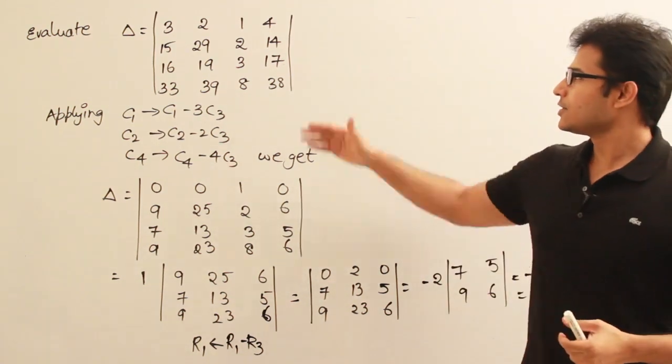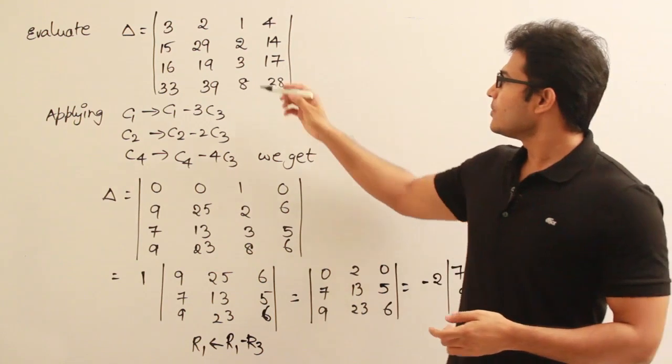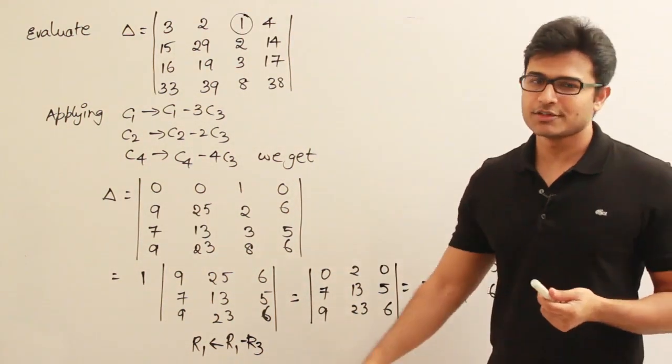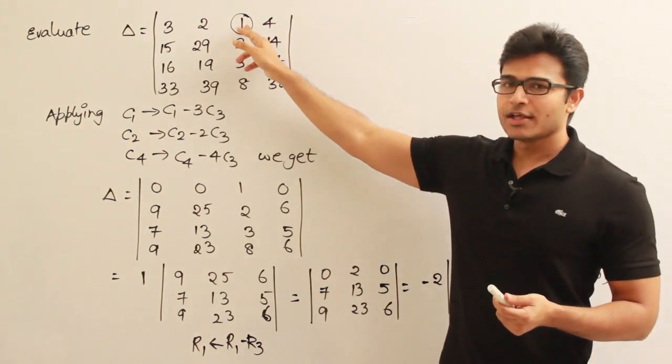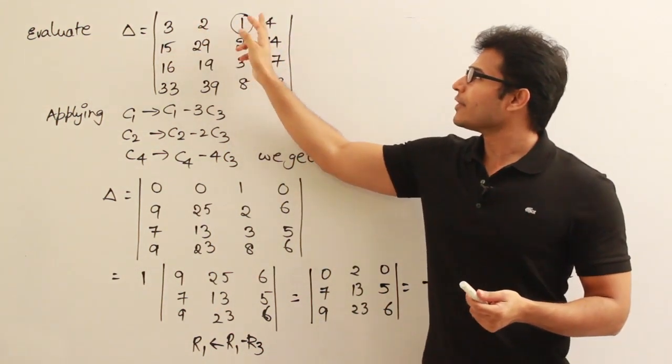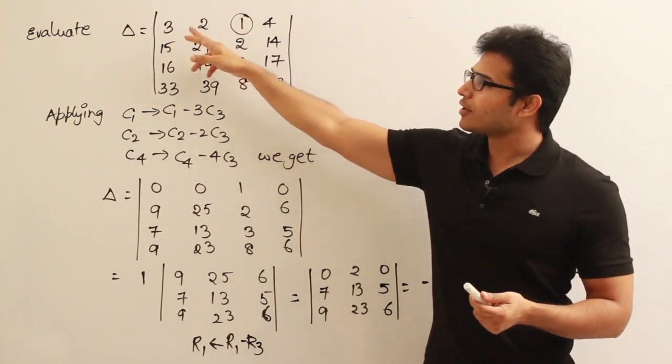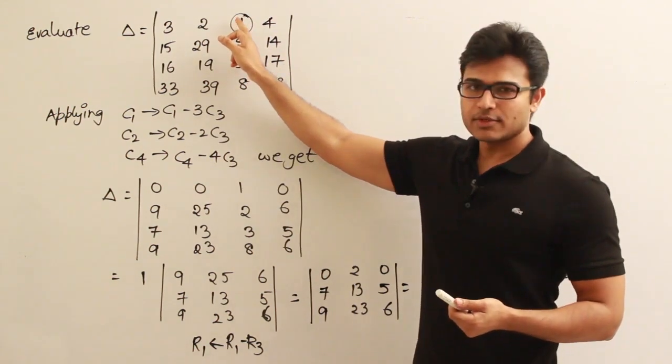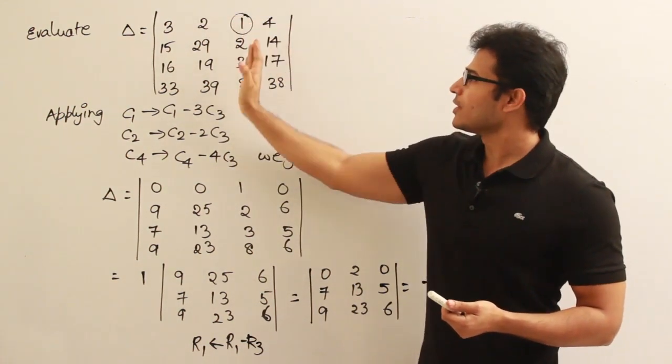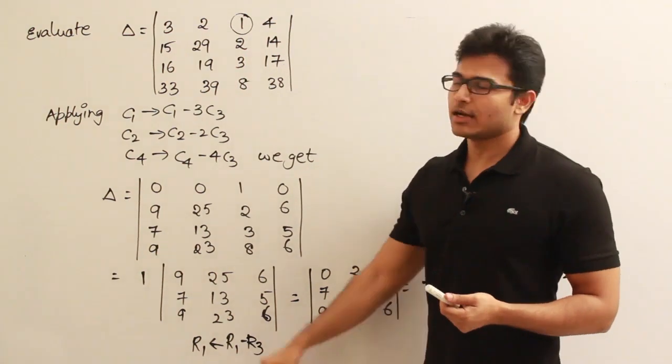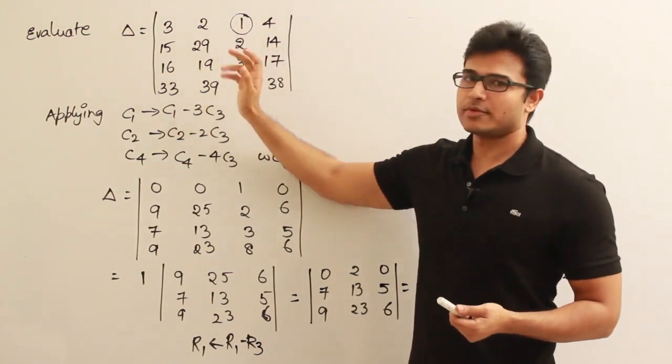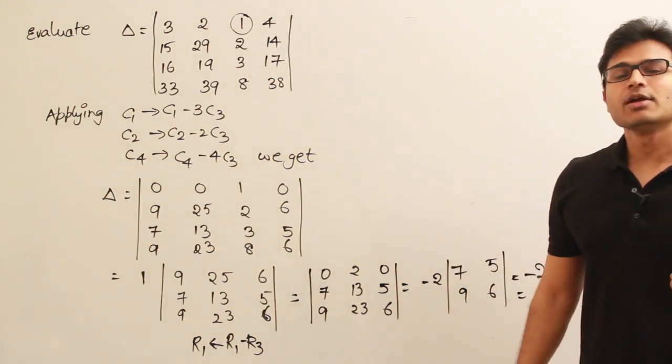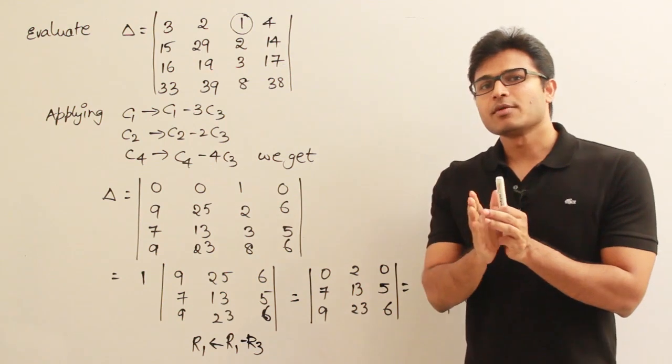If you observe this one, you can see the element 1 here. Whenever we get any element like that, we are generally lucky because using this one we can make all the elements of the other elements of this row to be zeros. We can multiply this one, all the elements of this column with 3, and subtract it from here. Then we can multiply with 2 and subtract it from here, multiply with 4 and subtract it from here.